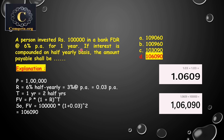Since the interest is compounded on a half-yearly basis, we divide the annual rate by 2: 6 divided by 2 gives 3 percent per half-year, which equals 0.03. The time duration is one year, and since we are using half-yearly compounding, one year equals two half-years, so n equals 2.